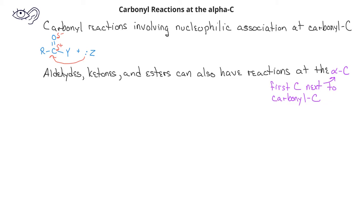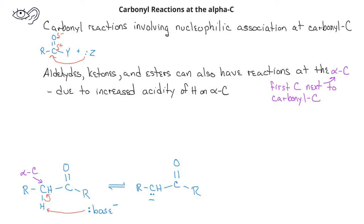The reason these reactions can take place is due to the increased acidity of the hydrogen on the alpha carbon. If a carbonyl compound were to be in the presence of a base, the base could remove a hydrogen from the alpha carbon, and we would then have a carbanion.